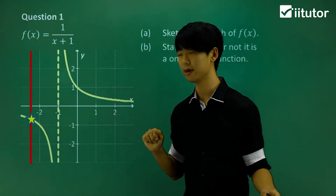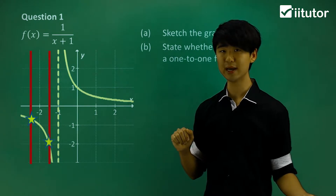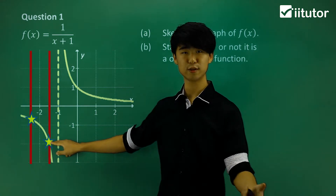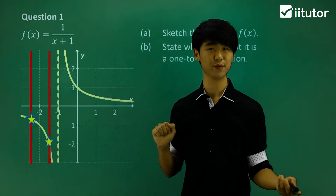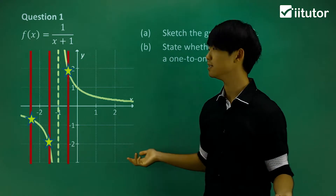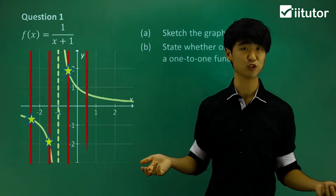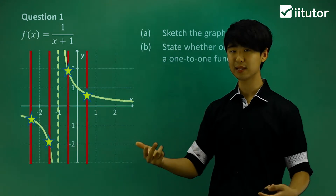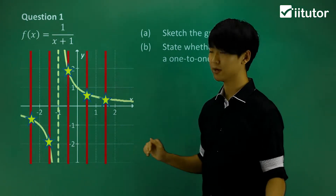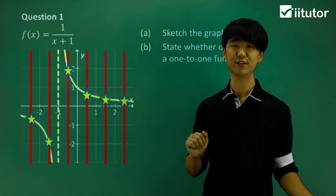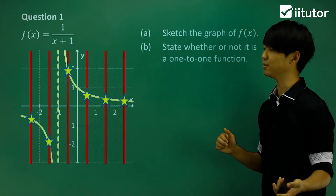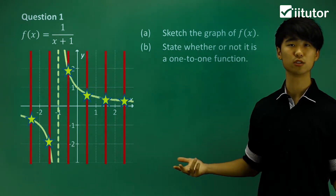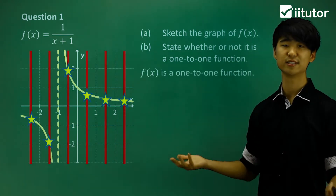For that x value I get 1 y value. If I draw another line at say x = -1.5 and go down, I hit another point — again just 1 y value. If I keep going across the graph, for all the x values in my domain I will have just one corresponding y value, which is what we want. So yes, this is a 1-to-1 function.